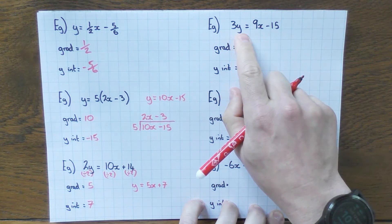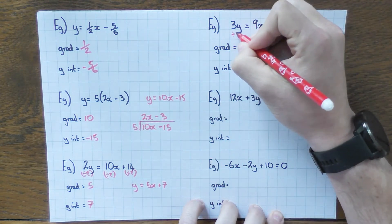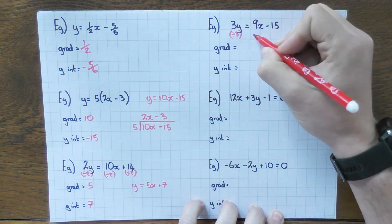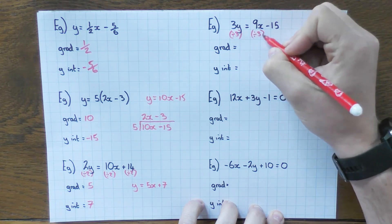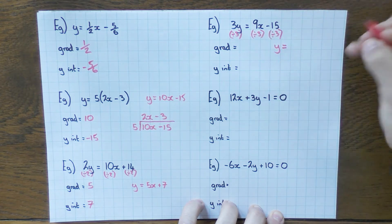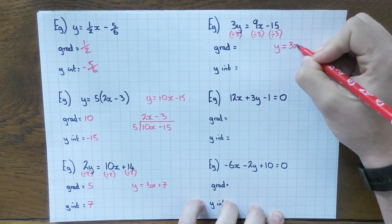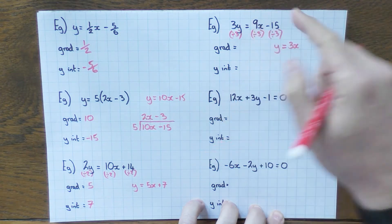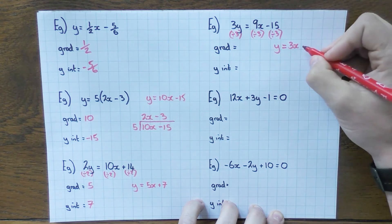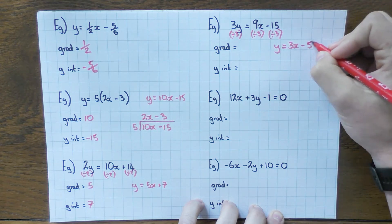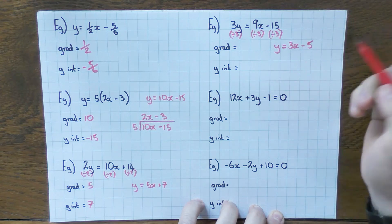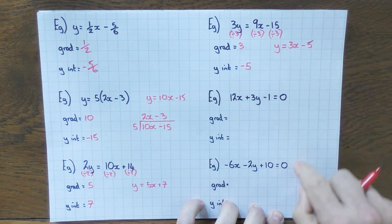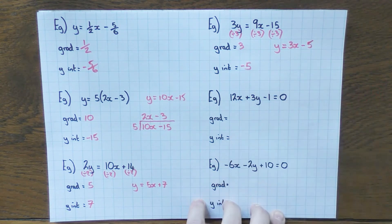Same thing here. It's a 3y. You're probably already ahead of me. If I divide by 3, it's going to leave me with just y. Brilliant. If I divide that by 3, I have to divide that by 3. And I have to divide that by 3. So 9x divided by 3 is 3x. Minus 15 divided by 3. Well, 15 divided by 3 is just 5. So minus 15 divided by 3 must be minus 5. Now you've got it as y equals. Absolutely fine. 3 must be the gradient, because it's in front of the x. And then the minus 5, the y-intercept, is the number at the back.